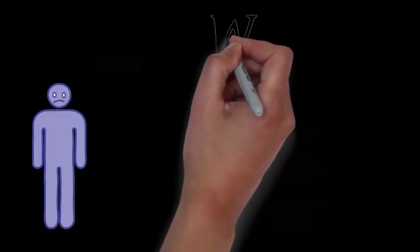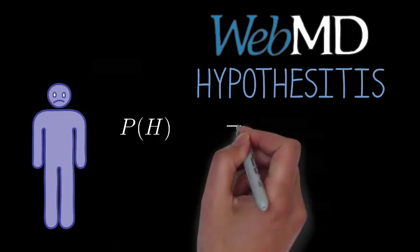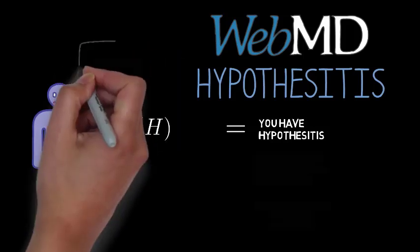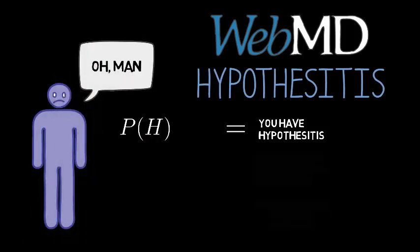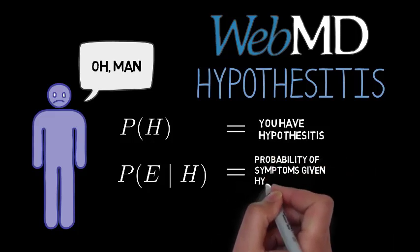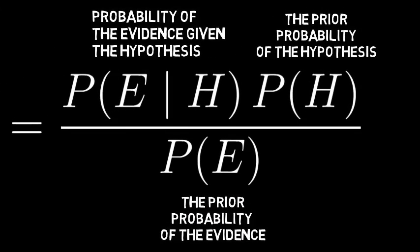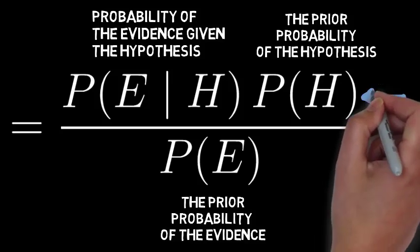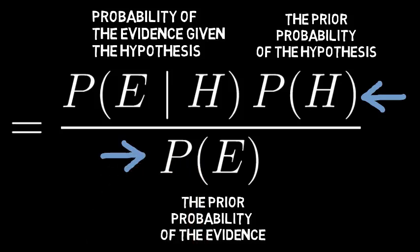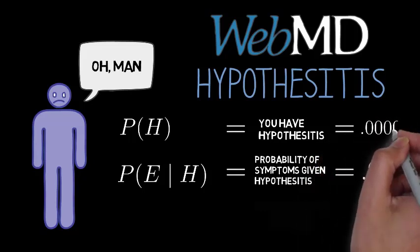Let's look at an example. Imagine that one morning you don't feel right and you go on WebMD to figure out what's wrong. You're browsing around until you find an illness that catches your eye: hypothesitis. So the hypothesis under consideration is that you've come down with hypothesitis. As you read through the list of symptoms, you realize that you have all of them. In other words, you have all of the symptoms that you would have if you had hypothesitis. So let's say p of e given h, or p of symptoms given hypothesitis, equals .95. You begin to freak out. But then you remember Bayes' theorem. It tells you that there are two more things you need to know in order to figure out the probability that you have hypothesitis: the prior probability that you would come down with hypothesitis, and the prior probability that you would have the symptoms that you actually have.